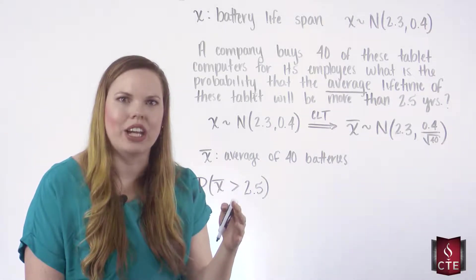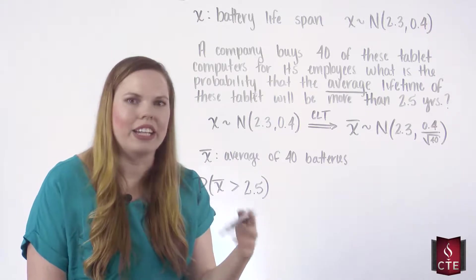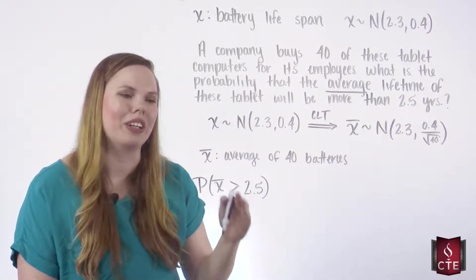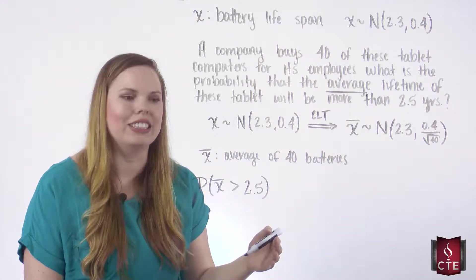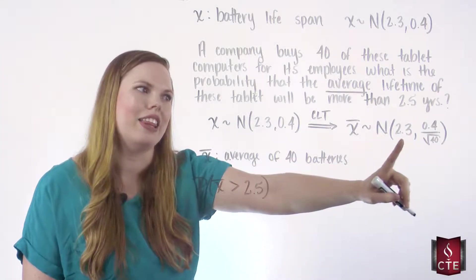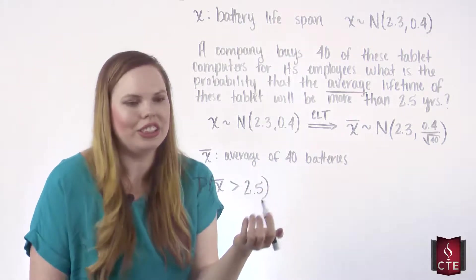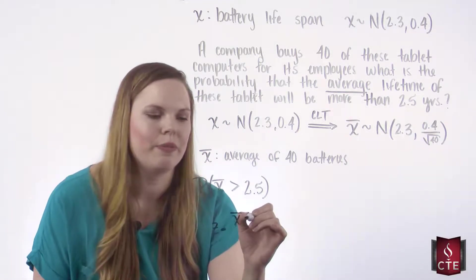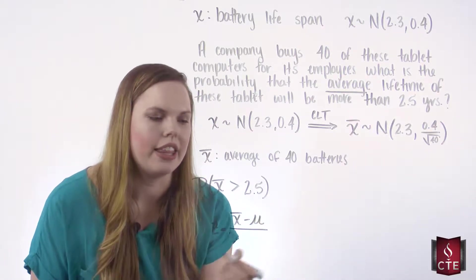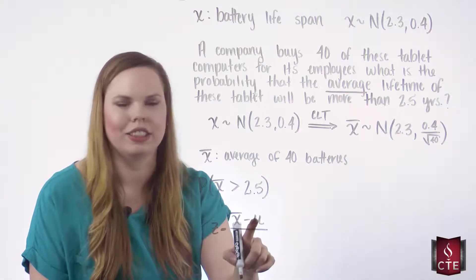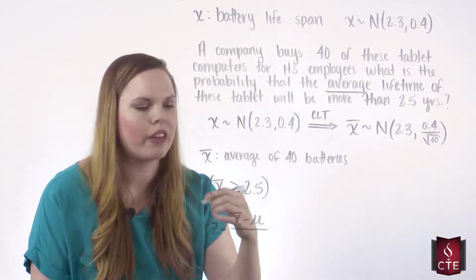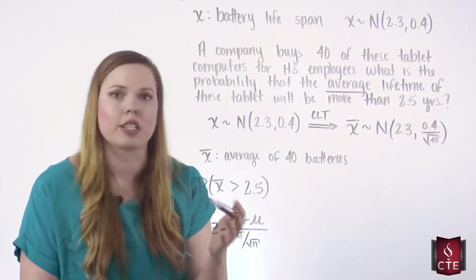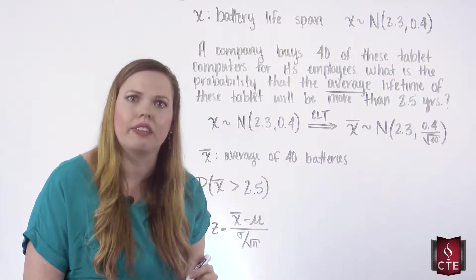Same procedure as in previous problems: find the Z score, convert to a standard normal, and look it up in the table. The difference is that now we're dealing with X-bar's mean and standard deviation, so it's a slightly different Z-score formula. We have X-bar instead of X, still subtracting mu, and dividing by the standard deviation, which is sigma over the square root of N.